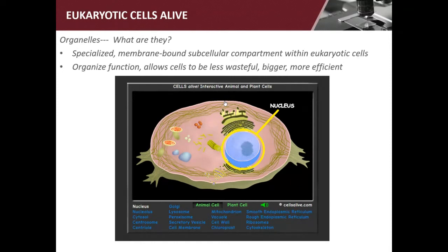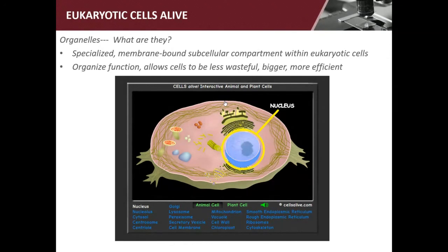Good question — are ribosomes membrane-bound or are they just blobs? What kinds of cells have ribosomes? All cells. And what kinds of cells have organelles? Only eukaryotes. And are all organelles membrane-bound? Yes, at least the ones we're talking about. So to answer your question: are ribosomes membrane-bound? No, they're not. They do not have a membrane around them. They are blobs of protein and some RNA — they just kind of float around.